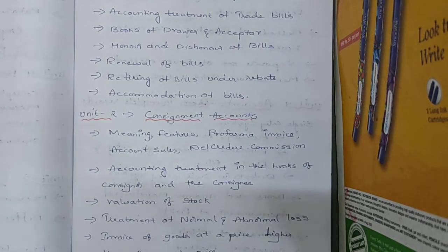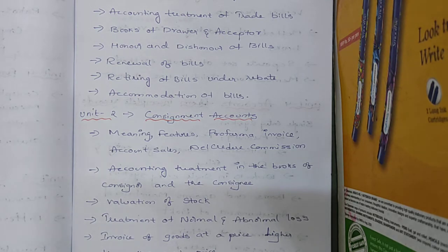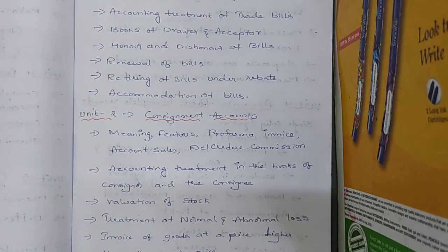Unit 2 is Consignment Accounts. Under consignment accounts we have: meaning, features, pro forma invoice, account sales, del credere commission, and accounting treatment in the books of consigner and consignee. This is the problematic part — all five units are related to practical problems. Next, valuation of stock and treatment of normal and abnormal losses.